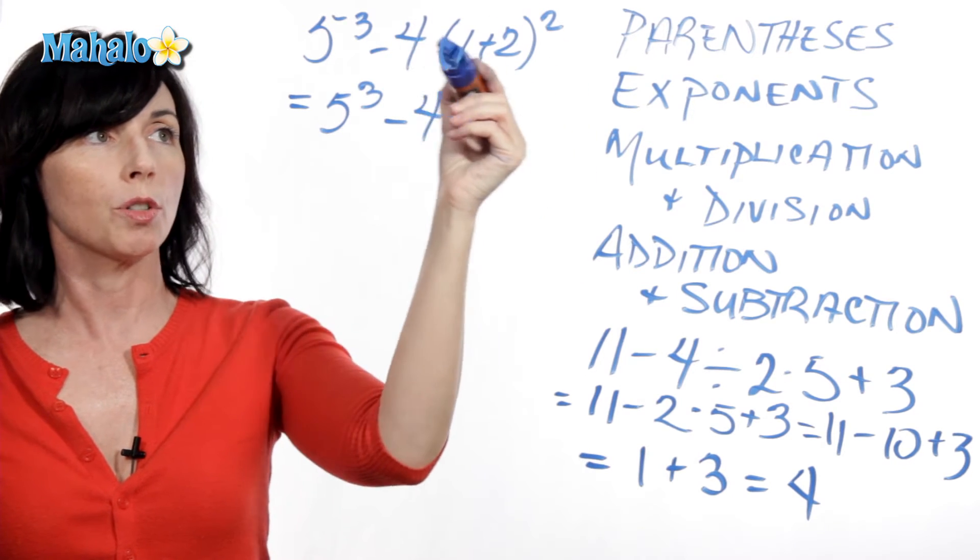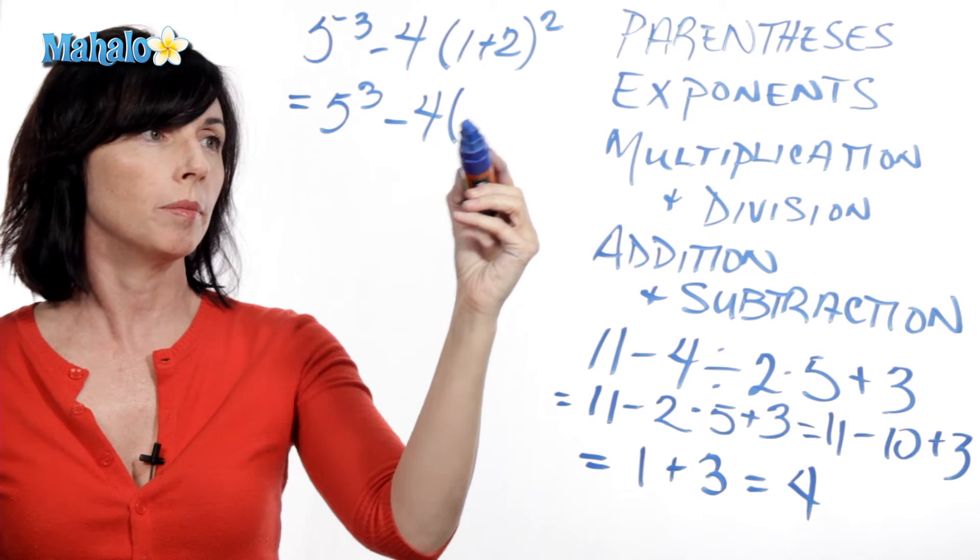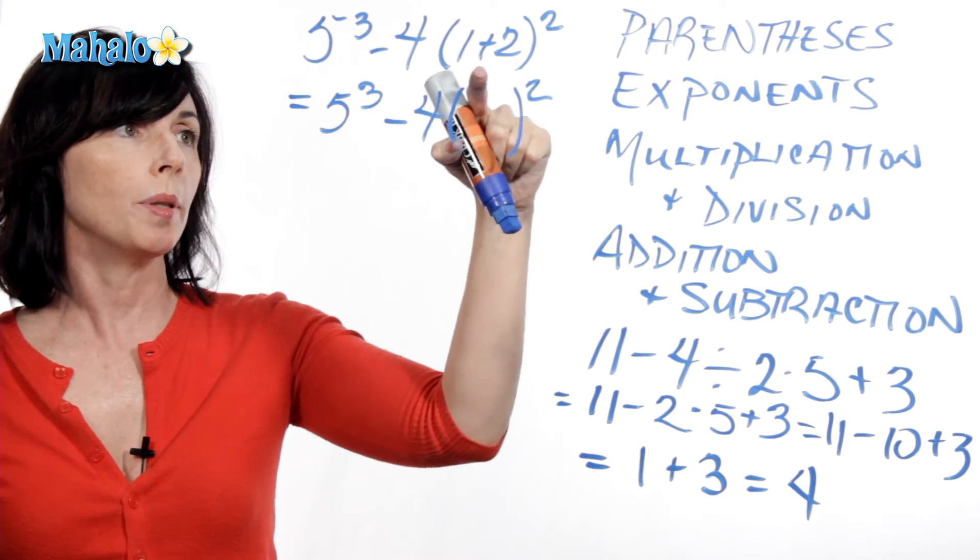Now, parentheses here are also just being used as another form of multiplication. So I'm just going to keep them, and I'm going to keep the squared, but I want to simplify what's inside of them. 1 plus 2 is 3.